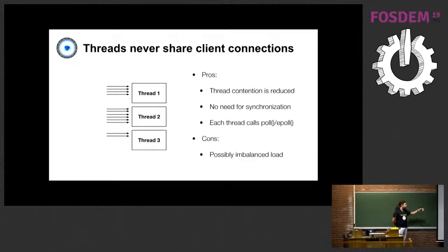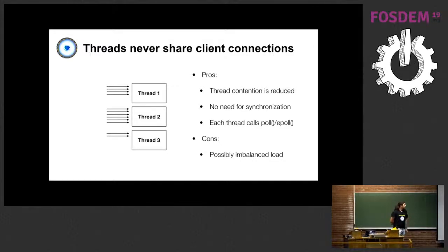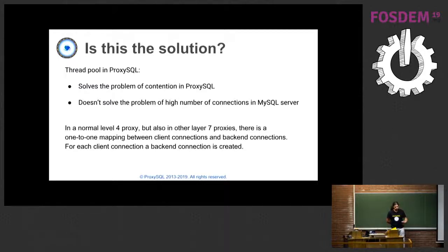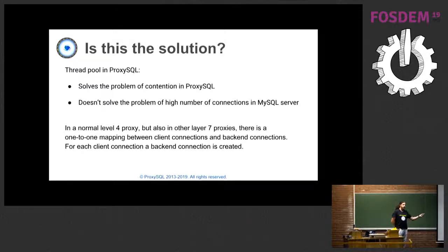It can happen that threads are unbalanced, but this is a quite rare case. So we have ProxySQL with its own thread pool - does this solve the problem of MySQL having a lot of connections? In reality, this by itself does not solve the problem. Having ProxySQL's own thread pool improves the performance of the proxy, but it does not solve the problem that you might still have a lot of connections to the database server.